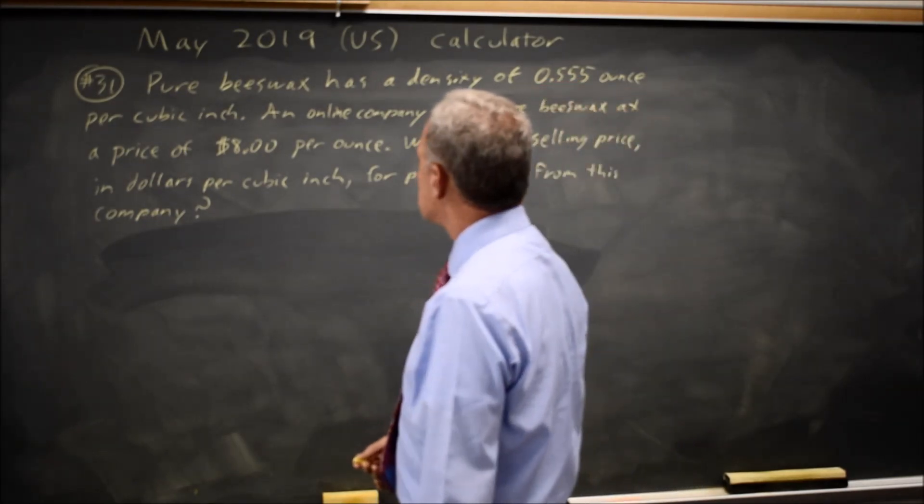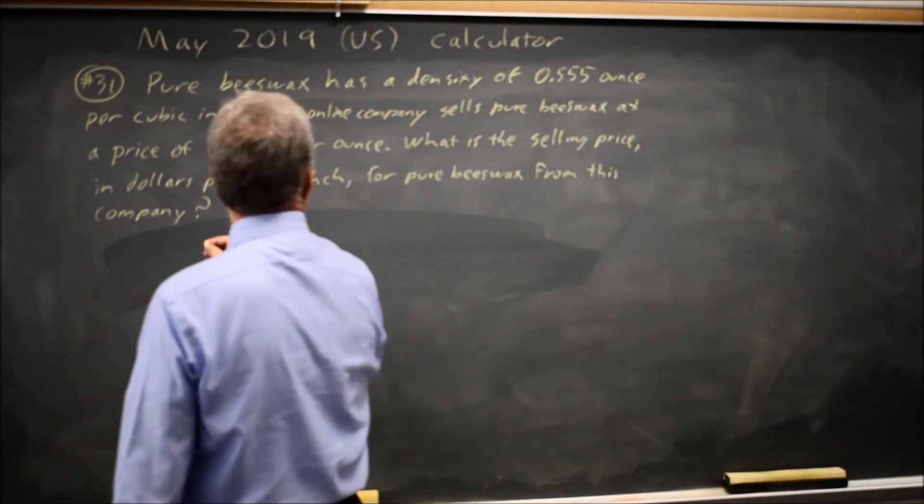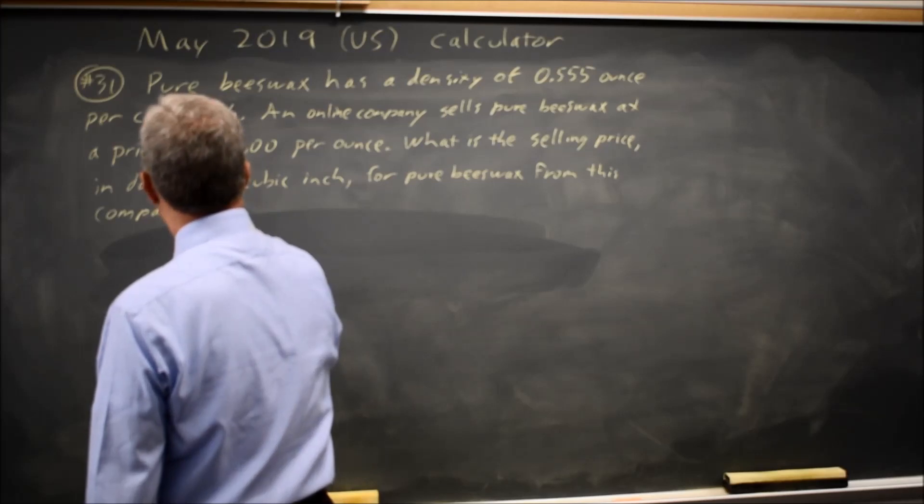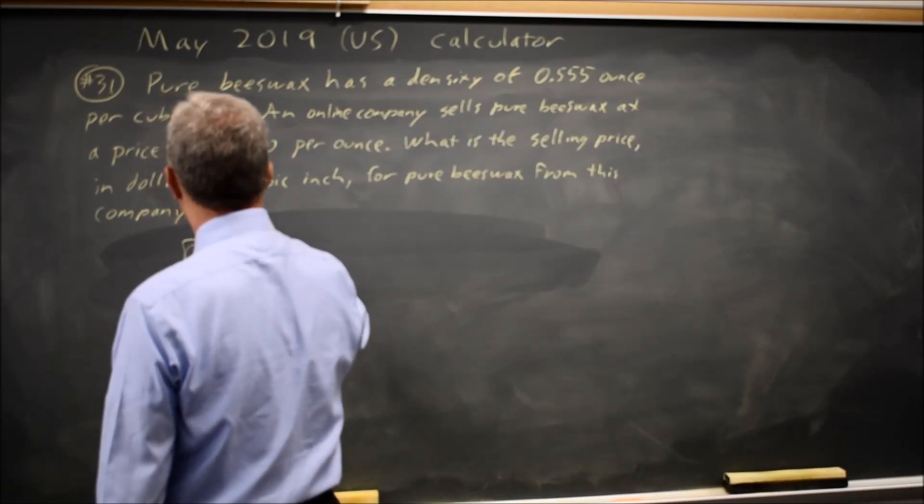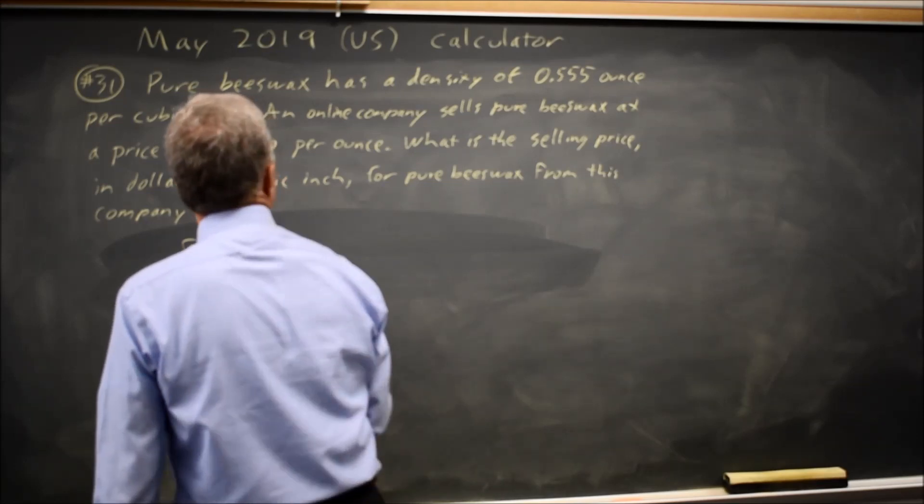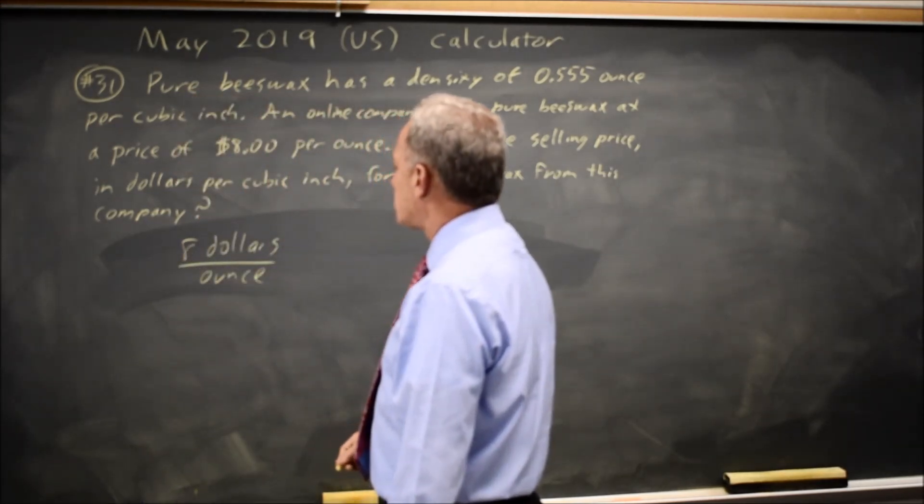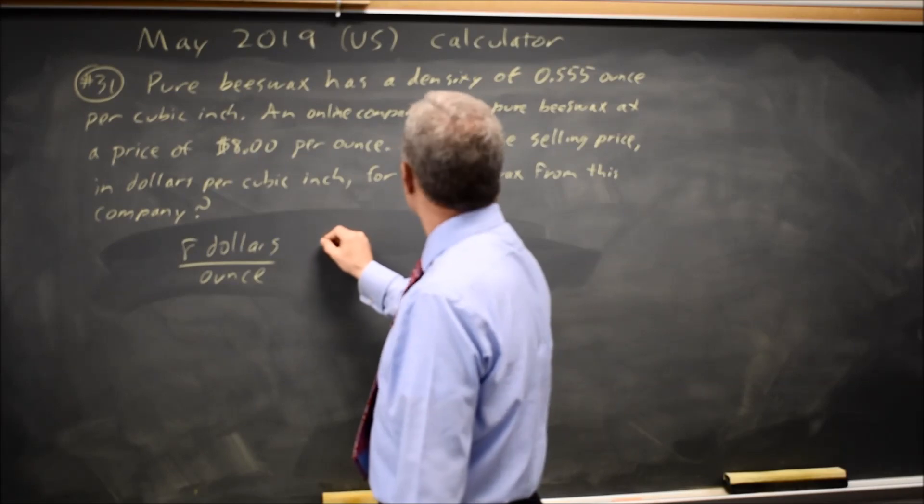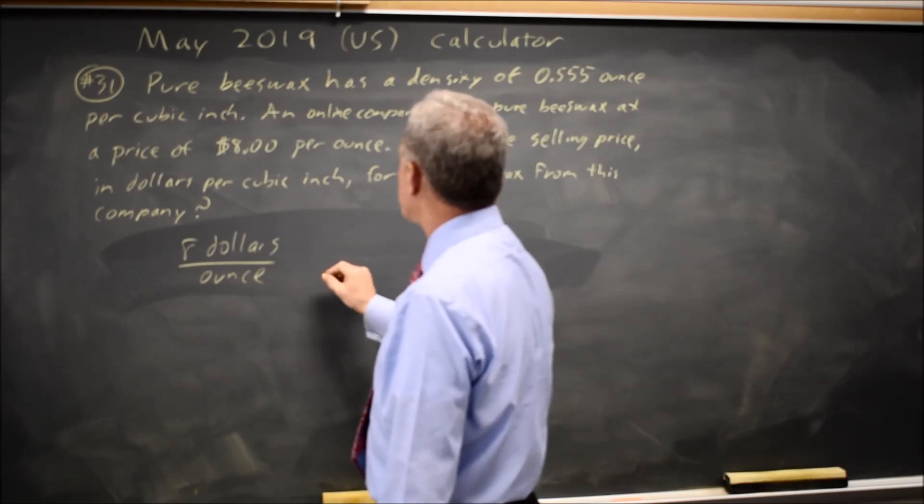And they ask for the price in dollars per cubic inch. So if I take eight dollars per ounce and I want to get dollars per cubic inch, I have to cancel my ounces and end up with cubic inches in the bottom.